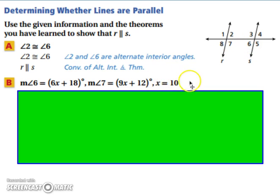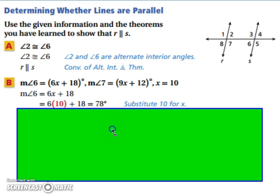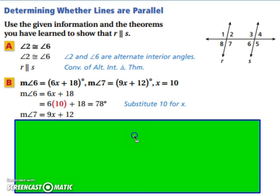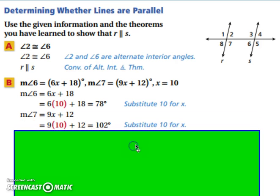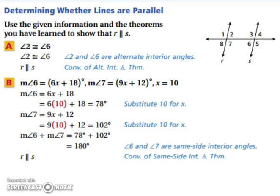We have the measure of angle 6 and the measure of angle 7. They're alternate interior angles, meaning that if they add up to 180 degrees, R and S will be parallel. We need to substitute our x value in first. The measure of angle 6 equals 6x plus 18; substituting 10 gives us 78. For angle 7, substituting 10 gives us 102. Since 102 plus 78 equals 180, by the converse of the same side interior angles theorem, R must be parallel to S.